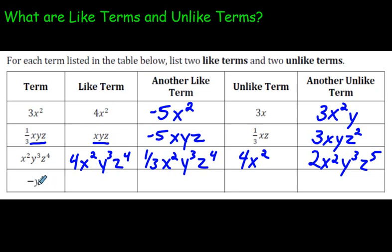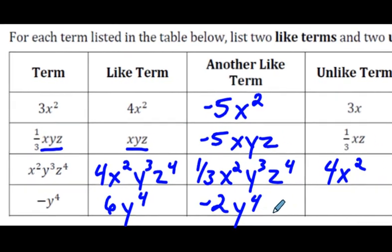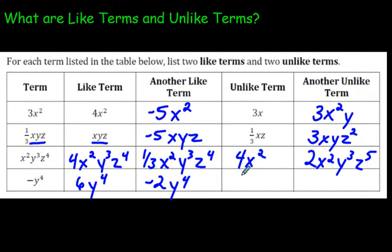So a like term to negative y⁴. Let's make it a 6y⁴. And another one, let's make a negative number, negative 2y⁴. That is supposed to be an exponent of 4. I'm sorry, it looks kind of, that 4 looks too big. But anyway, an unlike term, give me anything different, negative y³. That is definitely not a like term. Negative y⁴x, no, sorry, z, not x, because you should put them in order. Negative y⁴z. There we go. That is not a like term to this. I think we've pounded that in now.